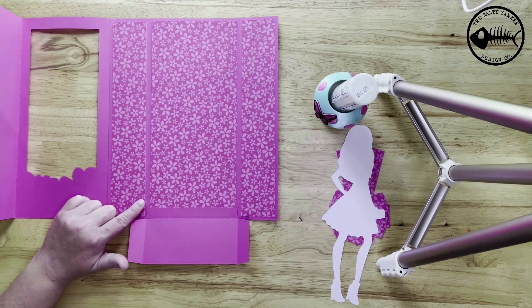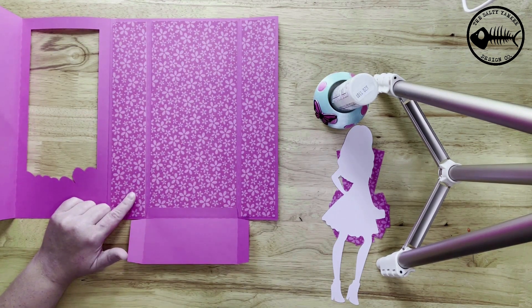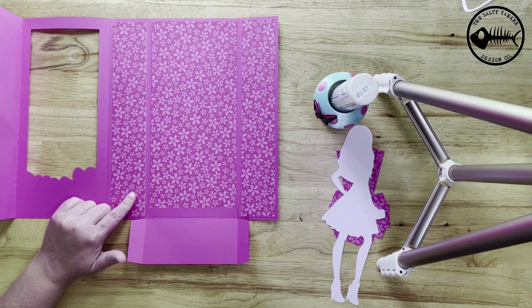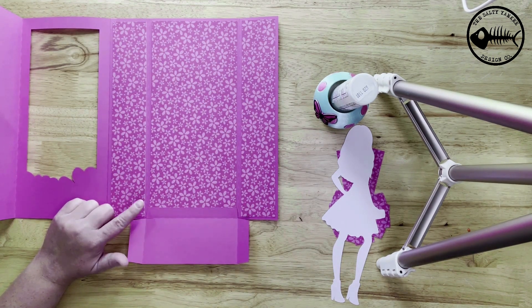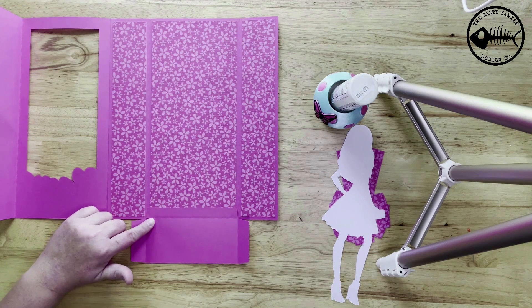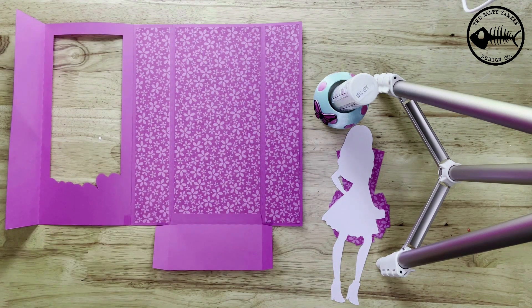So right here is where you can see the tab is on top of my liner. It's fine, it doesn't look bad, but it would look much better if the liner was on top. So I would glue this tab on and then glue on that liner.